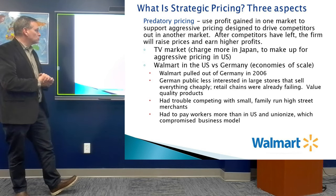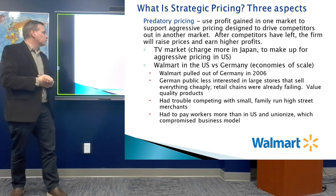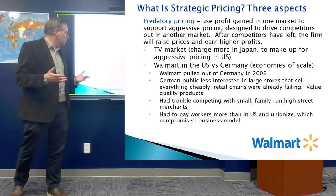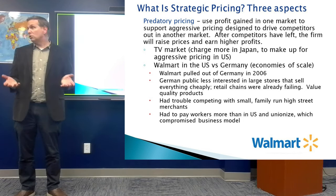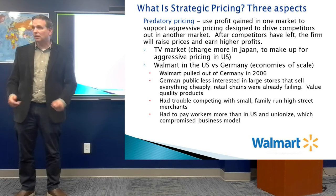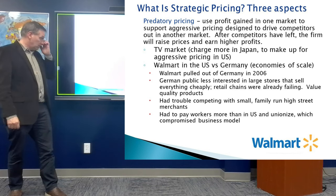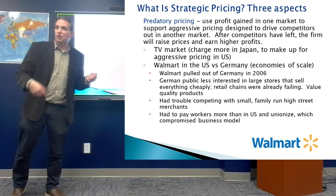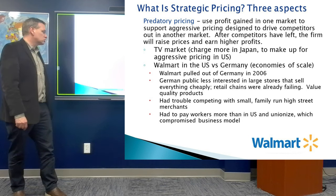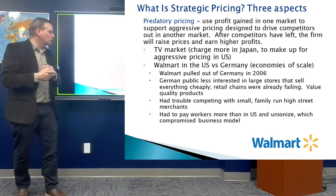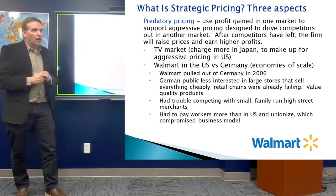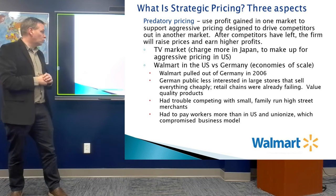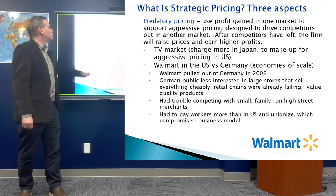Walmart tried predatory pricing in Germany but was unsuccessful and pulled out in 2006. The German public was less interested in large stores selling everything cheaply, retail chains were already failing at that time, and Germans tend to value quality products. Walmart had trouble out-competing small family-run high street merchants — the same people they put out of business in the US. There were also stronger unions and labor laws in Germany, requiring them to pay workers more. If your business model is to sell lots of things cheaply, you can't do that if you pay your workers a lot.